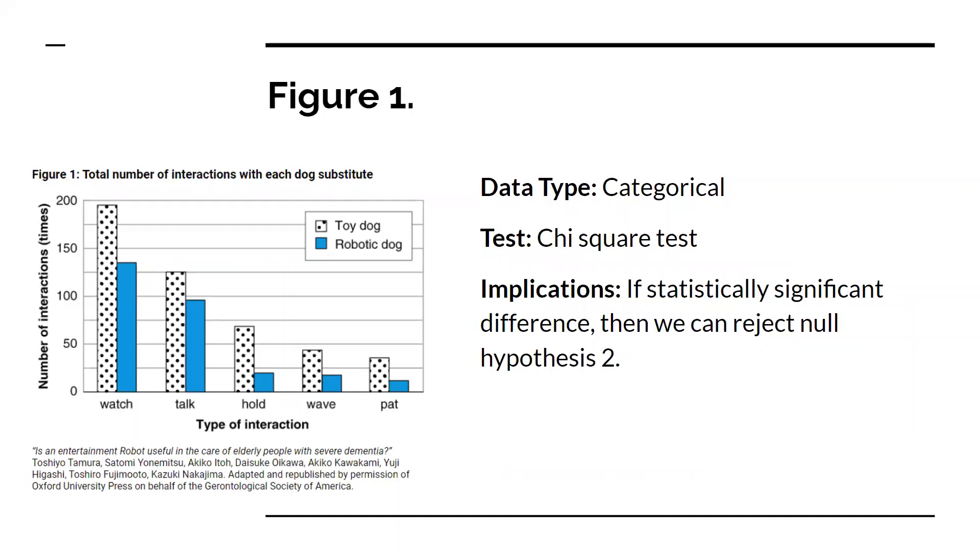Now we analyze Figure 1. To do this, we use a chi-square test because we have categorical data. The implication is that if there's a statistically significant difference, we can reject the null hypothesis we set for the second one. This would inform our design—if they preferred to watch the dog, you'd make it more aesthetic, but if they preferred to pat it, you'd make it feel nicer.